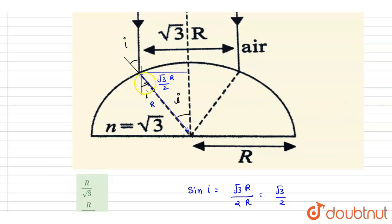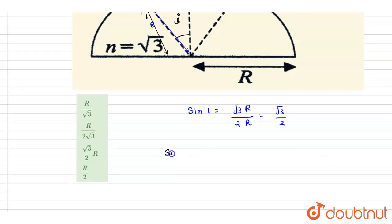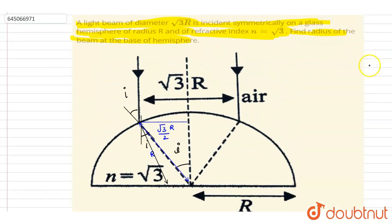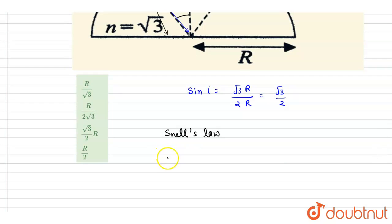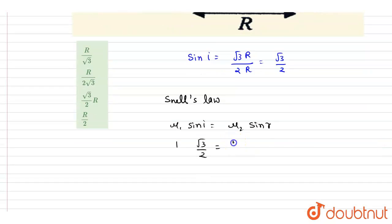Now we find the angle of refraction after the ray enters the glass. The ray bends towards the normal. Applying Snell's law: μ1 sin i = μ2 sin r. Here μ1 = 1 (air), sin i = √3/2, μ2 = √3 (given). So sin r = 1/2.